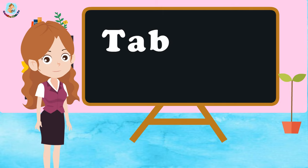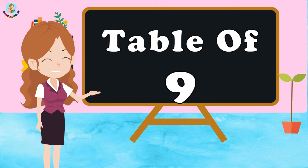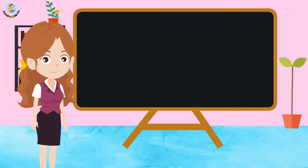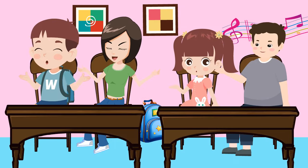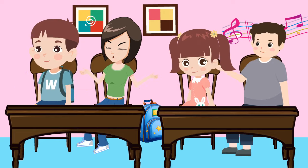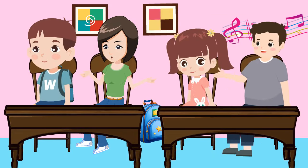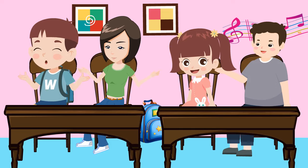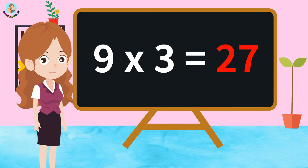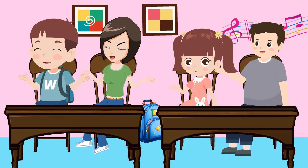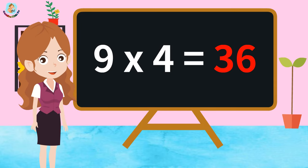Hey Kids, let's learn today the table of 9. 9 1's are 9. 9 2's are 18. 9 3's are 27. 9 4's are 36.